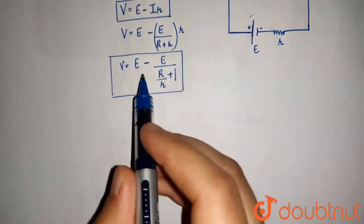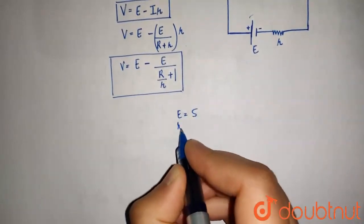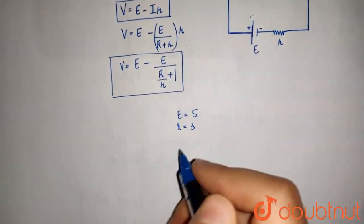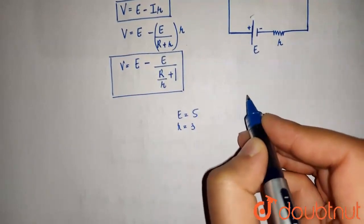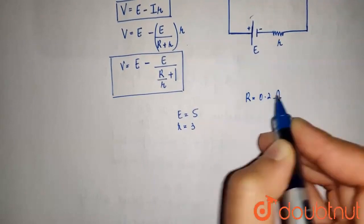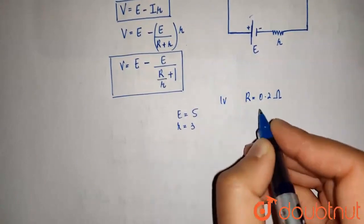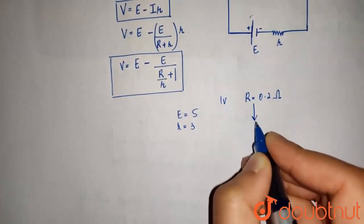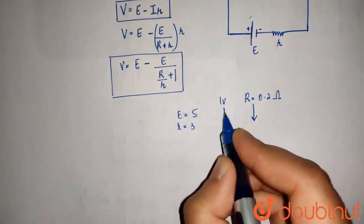I'll explain. So, for example, the value of E is 5 and the value of r is 3. So, if we put the value of R is equal to, say, 0.2 ohms, we'll see that V would be something else. Let's say 1 volt. If we increase the value of R continuously, this would also increase gradually.